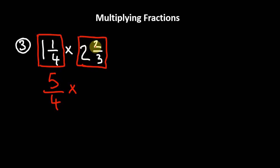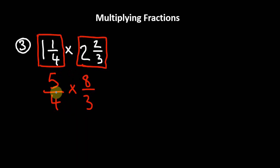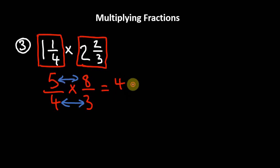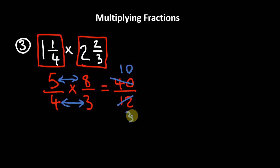Let's also convert 2 and 2/3: 3 times 2 is 6, plus 2 is 8, giving us 8/3. Now multiplying the numerators together and the denominators together: 5 times 8 is 40, divided by 4 times 3 which is 12. We then reduce 40/12 — 4 goes into 40 ten times and 4 goes into 12 three times — so the answer is 10/3. That's basically how we multiply fractions.